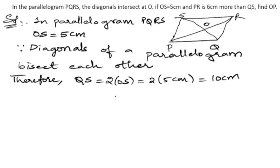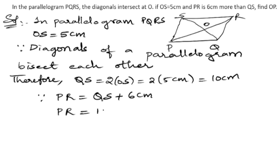Next, they have already given that PR is 6 more than QS. So we can write PR equals QS plus 6 centimeters. QS is 10 centimeters, so 10 centimeters plus 6 centimeters gives us 16 centimeters. So PR equals 16 centimeters.